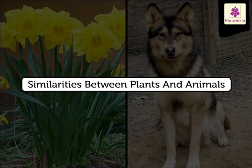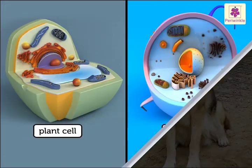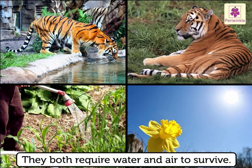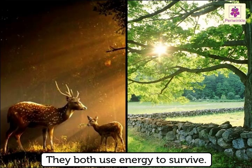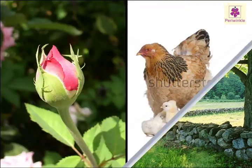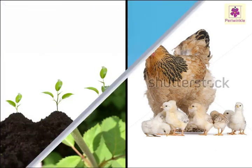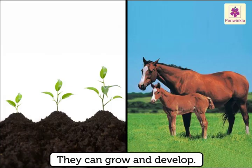Similarities between plants and animals: Plants and animals both have cells. They both require water and air to survive. They both use energy to survive. Both plants and animals can reproduce, and they both can grow and develop.